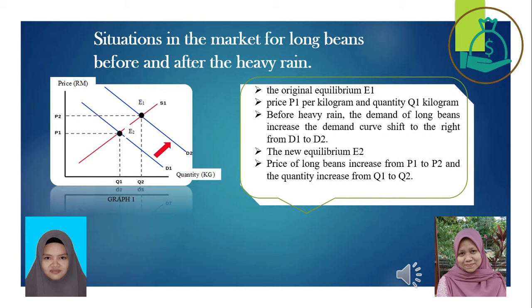Based on graph 1, the original equilibrium E1 is reached when the demand curve D1 intersects with the supply curve S1 at price P1 per kilogram and quantity Q1 kilogram. Before heavy rains, during Hari Raya, public demand for long beans increases, so the demand curve shifts to the right from D1 to D2. The new equilibrium E2 is reached at price P2 and quantity Q2.